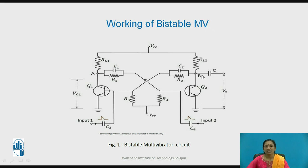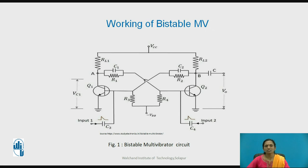We are assuming transistor Q2 has the output, so we have logic one here. When Q1 is ON, VC2 equals VCC, and that voltage is provided to the base of transistor Q1, so a large voltage appears at the base of Q1. This drives Q1 into saturation, where its collector voltage becomes very small. That small voltage is fed back to the base of Q2, keeping Q2 in the OFF condition. This is the first stable state.